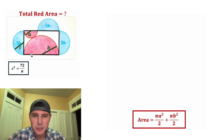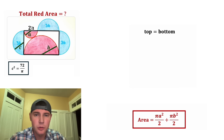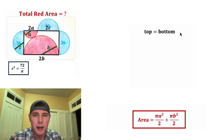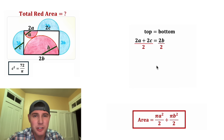Now, what's the next easiest thing we can do? I'm noticing the bottom is the diameter of this semicircle, and the top is made up of diameters of these two semicircles. We can set the top equal to the bottom. The radius of this semicircle is a, so the diameter is 2a; the radius of this one is c, making the diameter 2c; and on the bottom the radius is b, making the diameter 2b. So top equals bottom: 2a + 2c = 2b.